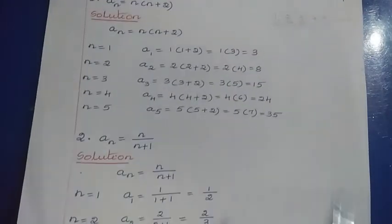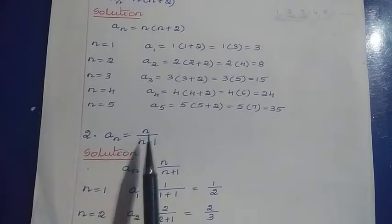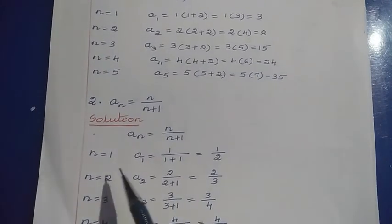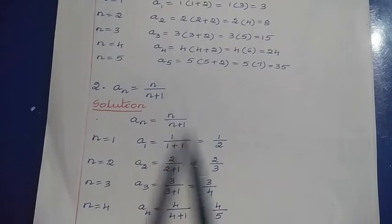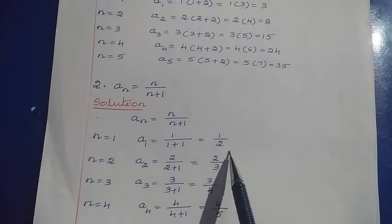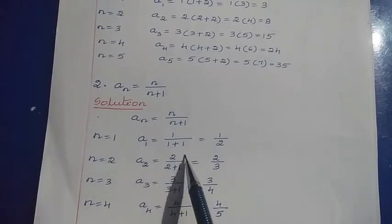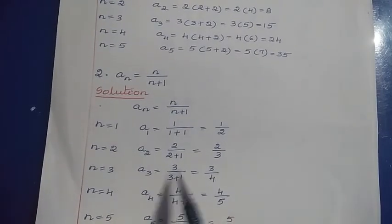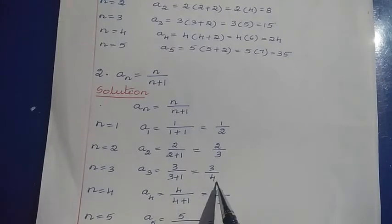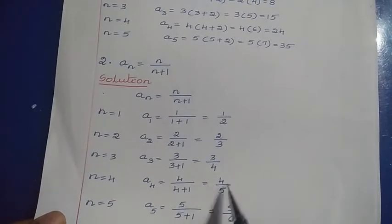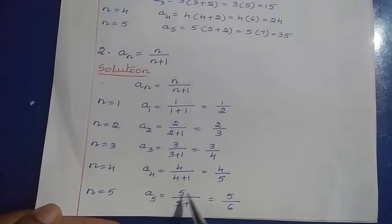Question 2: aₙ = n / (n + 1). We have to find the first 5 terms — put the value of n from 1 to 5 in the nth term formula. For n = 1: a₁ = 1 / (1 + 1) = 1/2. For n = 2: a₂ = 2 / (2 + 1) = 2/3. For n = 3: a₃ = 3 / (3 + 1) = 3/4. For n = 4: a₄ = 4 / (4 + 1) = 4/5.